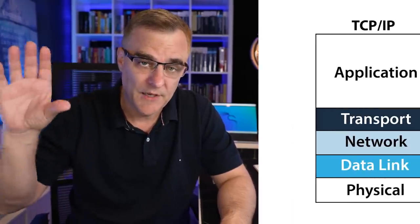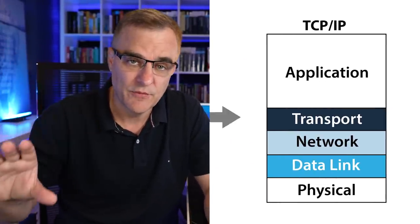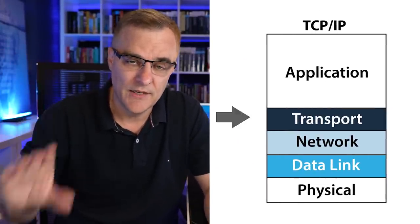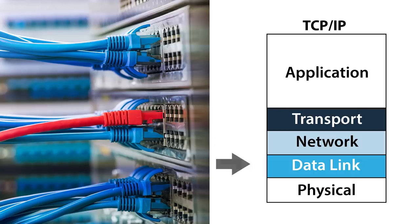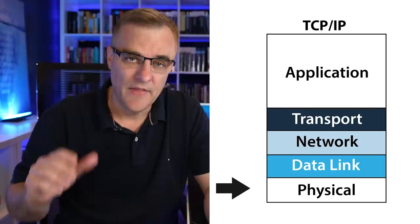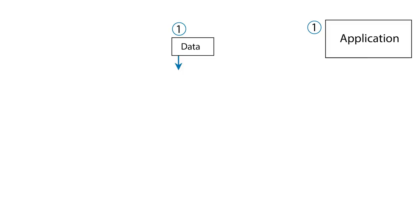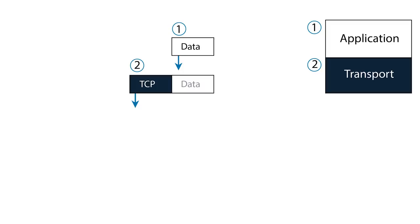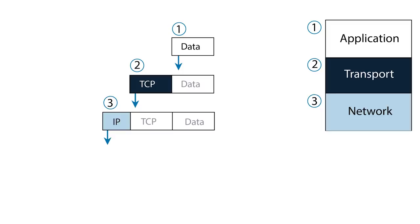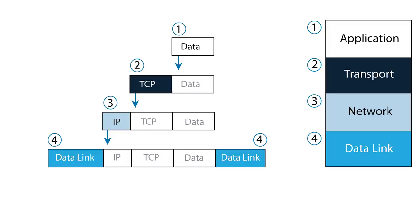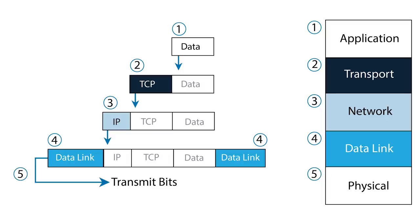People who are studying for their CCNA, as an example, are taught that we have the application layer, then we have the transport layer, then we have the network layer, then we have data link, and then we have a physical layer. And then we're taught how protocol data units are sent from the application layer — then we get a header for the transport layer, TCP as an example, then we get an IP header, then we get an Ethernet header, and then it sends bits on the wire.